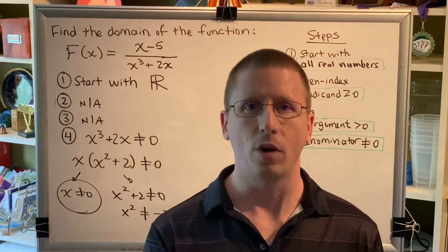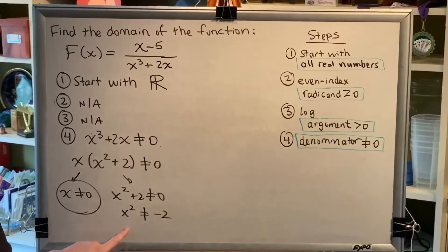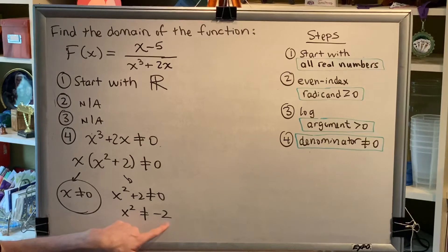When you square a real number, the result has to be positive or 0 and can never be negative.